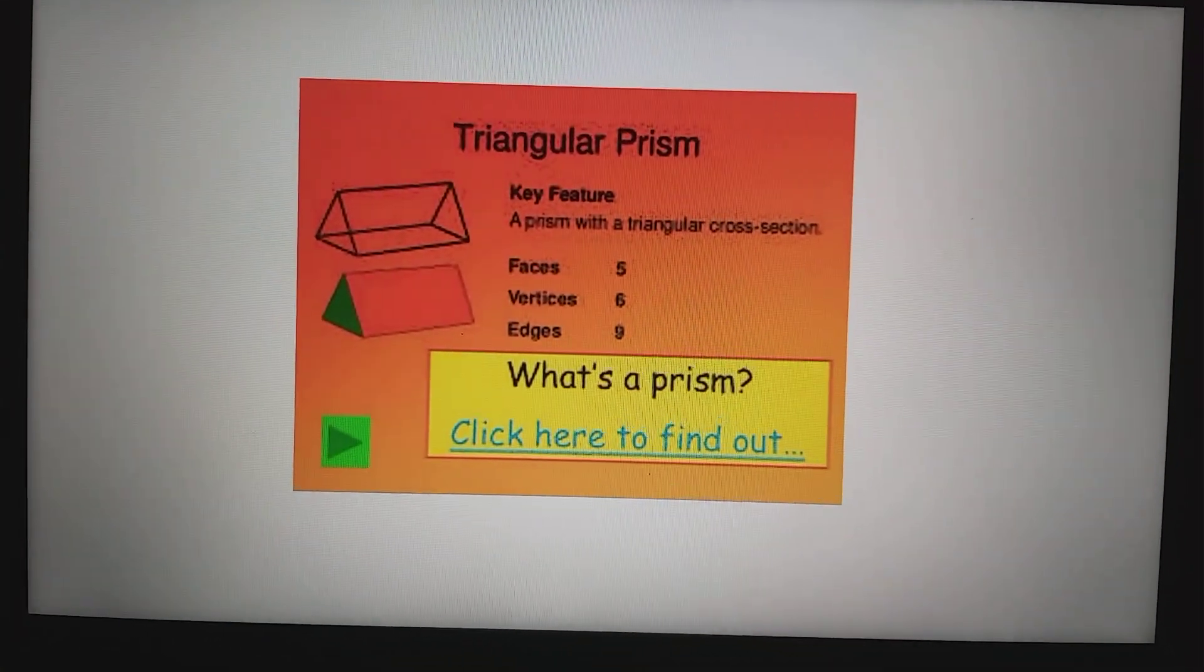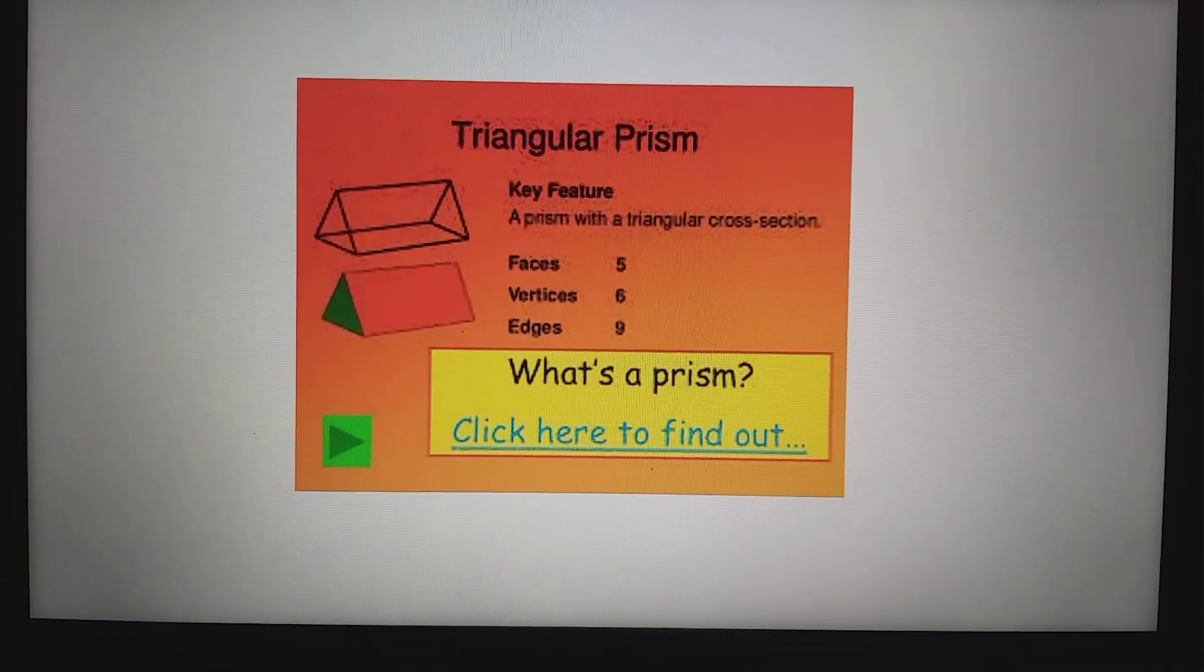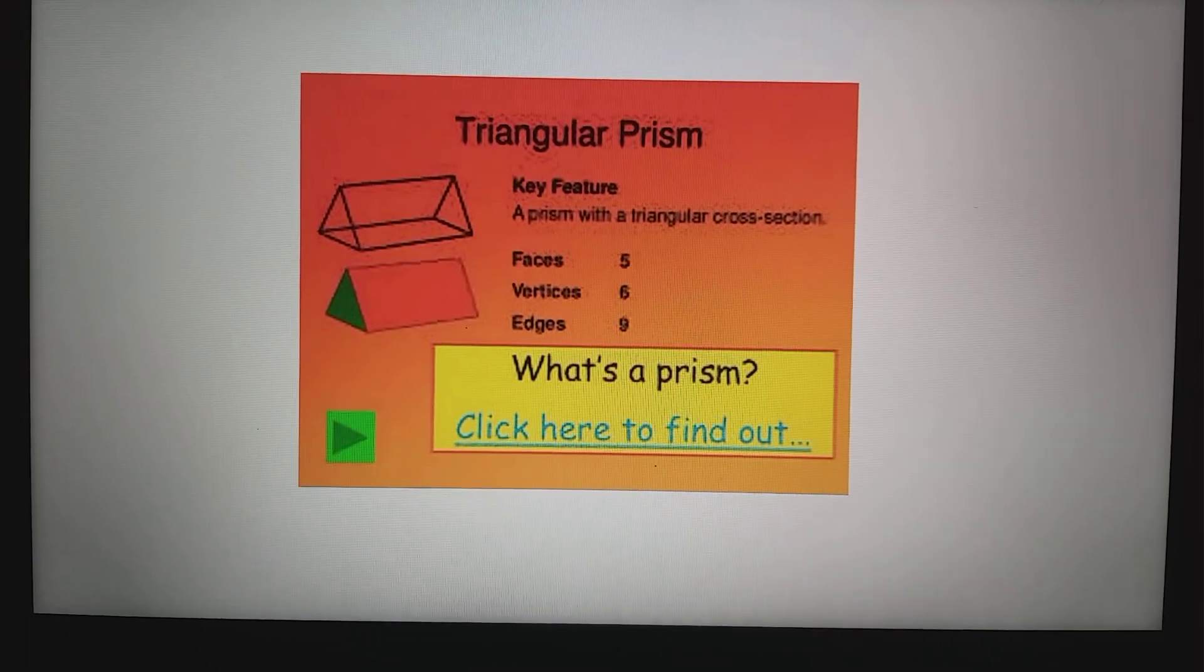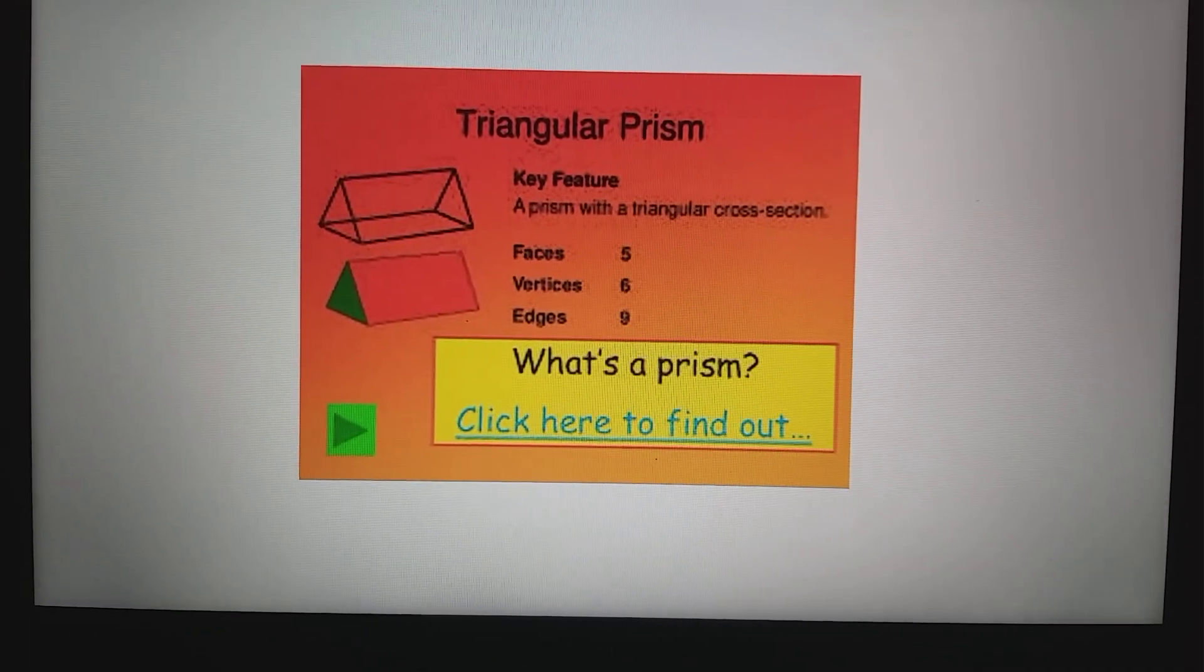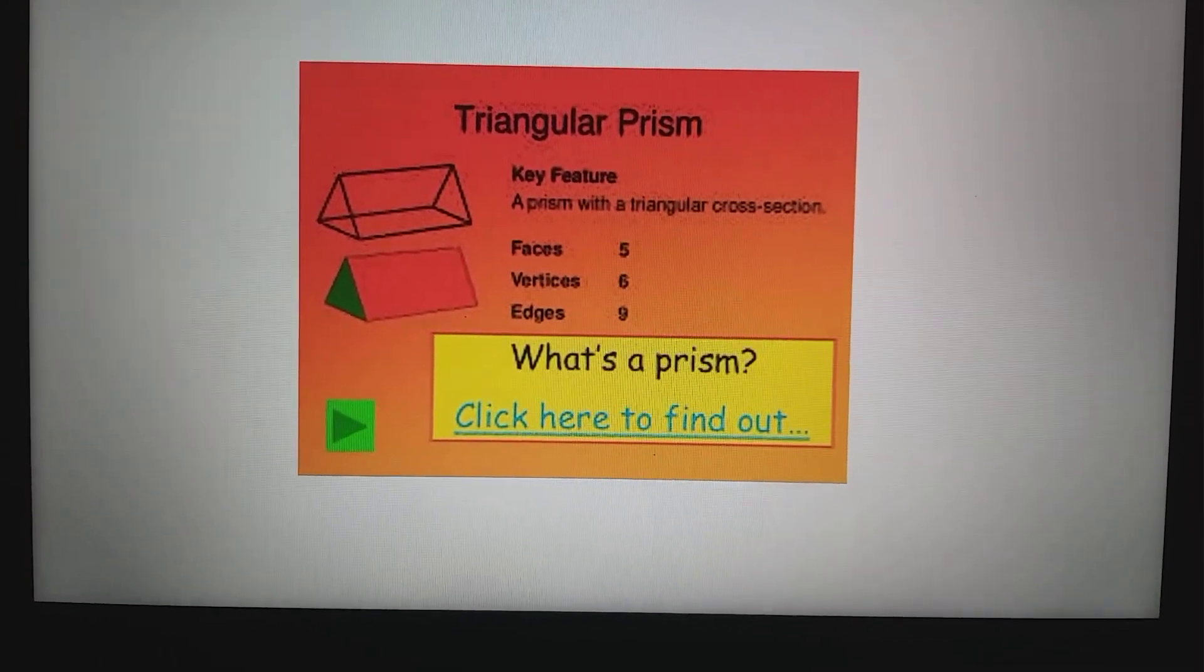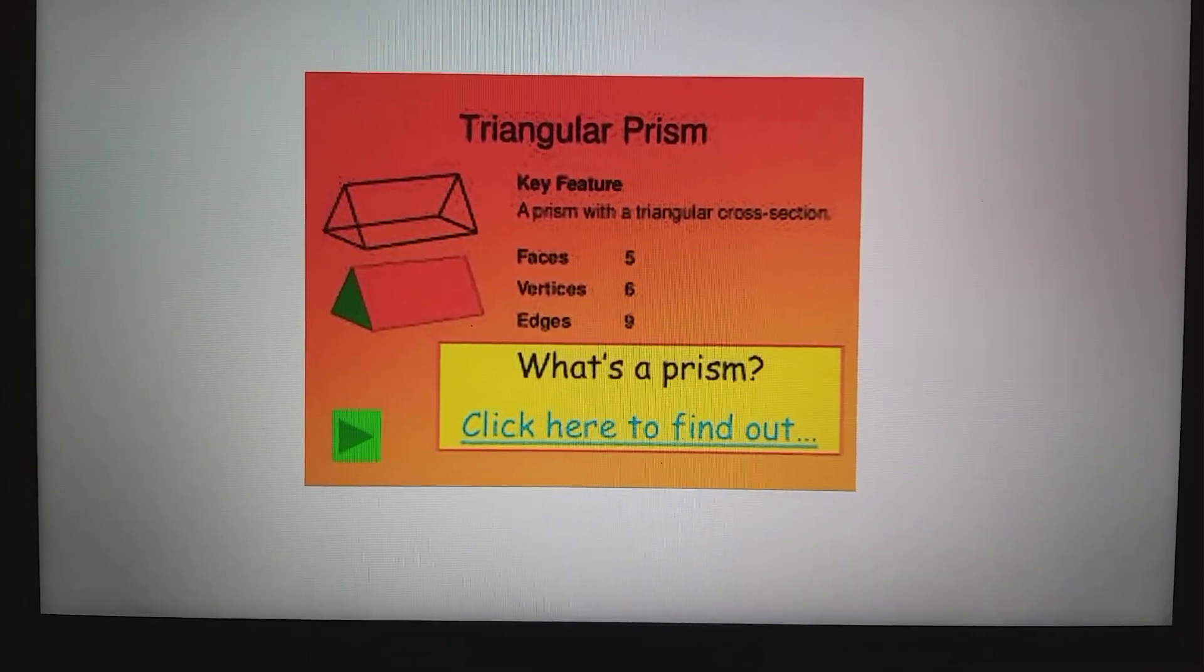Let's go to the next solid. This is called a triangular prism. So take a close look at this solid here. And where can you find this in your home? Well, it's right above your roof. Your roof has the shape of a triangular prism.